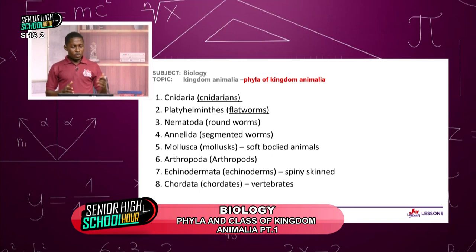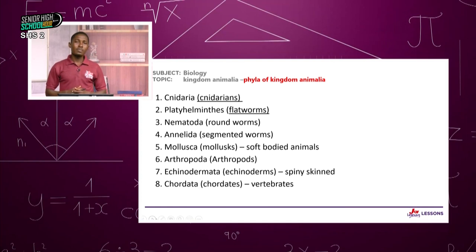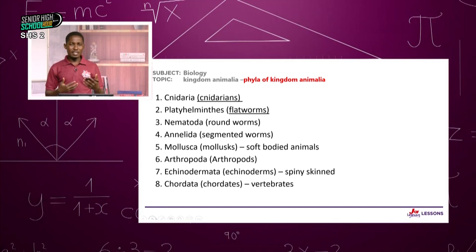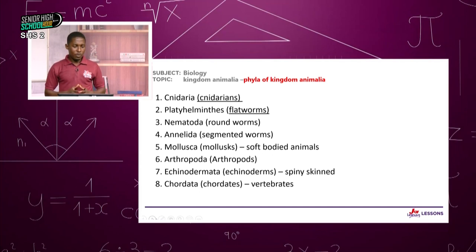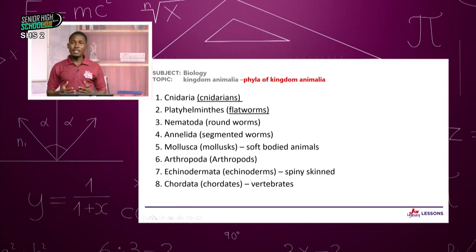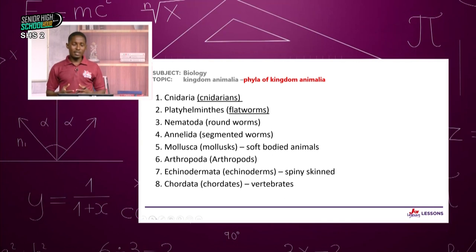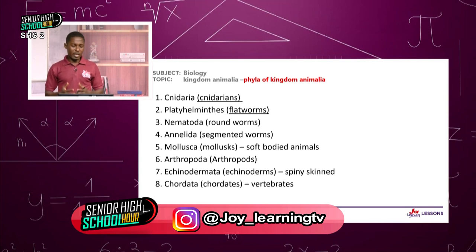So we have Phylum Cnidaria — note that in plants we use 'division', but here we use 'phylum'. Phylum Platyhelminthes are the flatworms. Nematoda are the roundworms. Phylum Annelida are the segmented worms, like the earthworm. Phylum Mollusca is where snails belong. Phylum Arthropoda has insects and crabs. Phylum Echinodermata — you hardly see them around, but we'll get to starfish. Then Phylum Chordata, where human beings belong, along with fish, toad, birds, and reptiles.